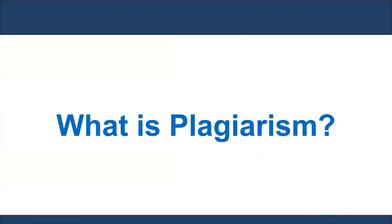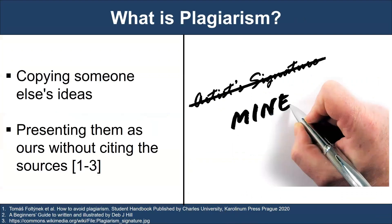During their early phase, many researchers and students are unaware of plagiarism. Plagiarism occurs when we copy someone else's ideas and present them as ours without citing the sources. In today's era of the internet, information is easily accessible to everyone. Therefore, when writing research papers, submitting assignments or research proposals, we copy certain information from various sources without citing them.